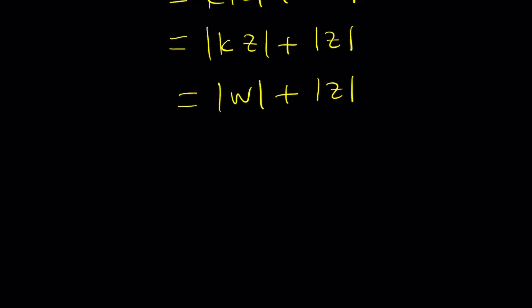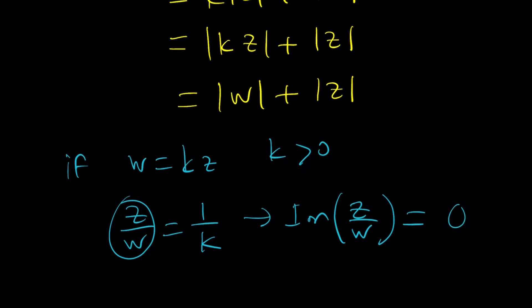Now, we still didn't find the answer, did we? No. If W is equal to KZ, where K is a positive real number, then Z over W is just going to be 1 over K, which is again a positive real number. And if our number is a positive real number, its imaginary part is not going to exist or it's going to be 0.